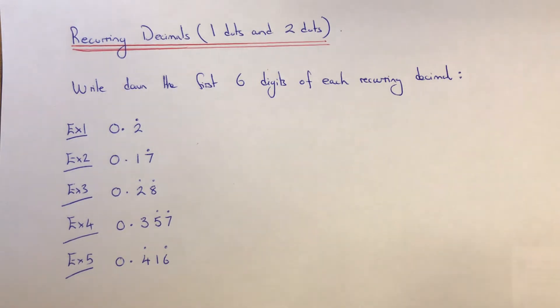If the recurring decimal has one dot, it's just that number that gets repeated at the end. If the number has two dots, then the numbers between those two dots get repeated at the end of the number.